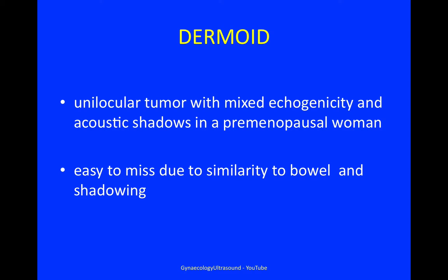So a dermoid is a unilocular tumour with mixed echogenicity and acoustic shadows in a premenopausal woman. It's quite easy to miss due to the similarity to bowel and shadowing.